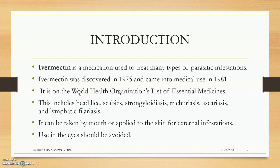Ivermectin is a medication used to treat many types of parasitic manifestations. Ivermectin was discovered in 1975 and came into medical use in 1981. It is also present on the WHO's list of essential medicines.